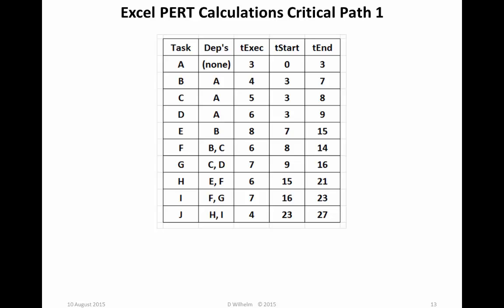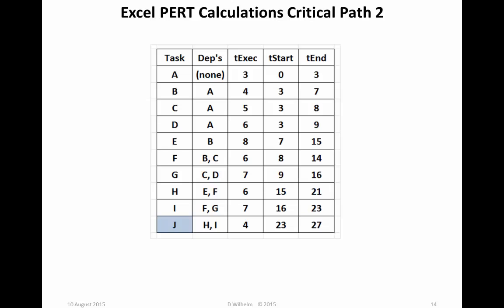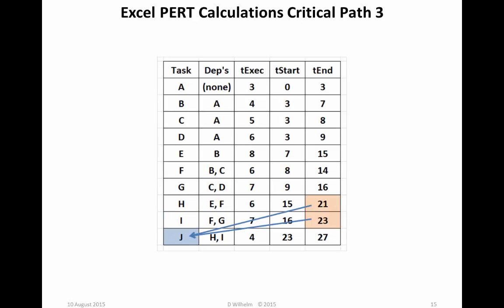The next step is to determine the critical path. Unfortunately, there's no way to do this automatically as we did with the cumulative elapsed time, but neither is it that bad. Task J is on the critical path. There are no parallel tasks. It is the final task. So J is on the critical path. What delays task J? Well, we see its dependencies are tasks H and I. Task H ends at 21. Task I ends at 23. So task I is the one on the critical path.